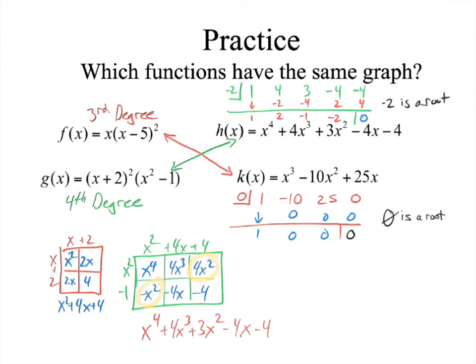Let's look at this one. We notice these are the same function because they're both third degree, and these two because they're both fourth degree — that was the easiest. Another way you can do it: if you foil this out, you will create that. See right here — x plus 2 squared. I foiled that x plus 2 squared to get this, then multiplied that by the remaining factor using the box method, and the answer matches. So a way to check which ones are the same is by foiling and doing boxes like this to match them.